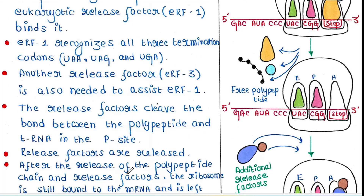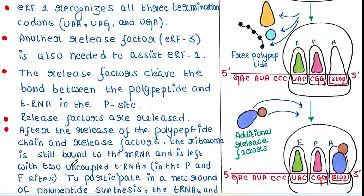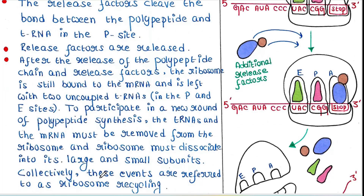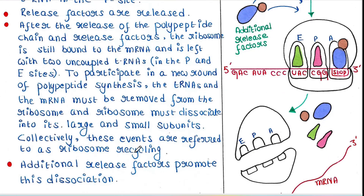After the release of the polypeptide chain and release factors, the ribosome is still bound to the mRNA and is left with two uncharged tRNAs in the P and E sites. These tRNAs do not have any amino acid or polypeptide chain. To participate in a new round of polypeptide synthesis, the tRNAs and mRNA must be removed from the ribosome, and the ribosome must dissociate into its large and small subunits. Collectively, these events are referred to as ribosomal recycling.